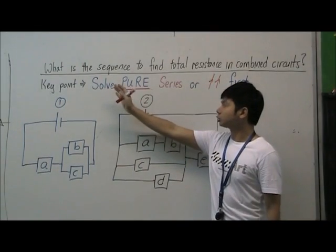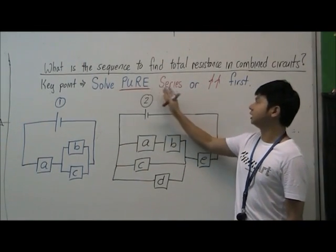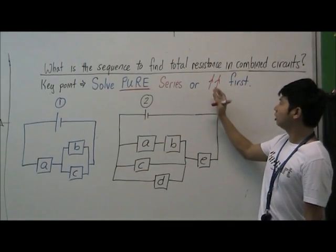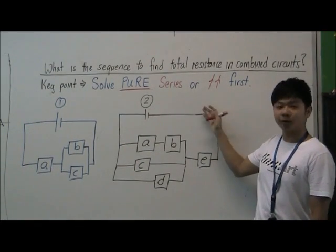The key point here is that you solve either the pure series branch or the pure parallel branch first. How do we work on doing this?